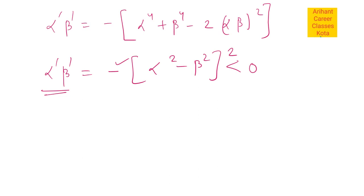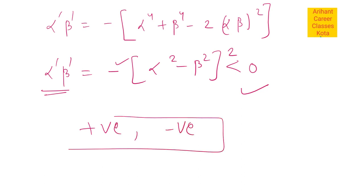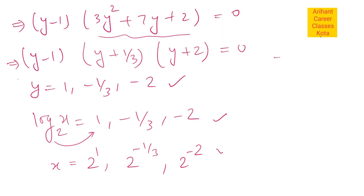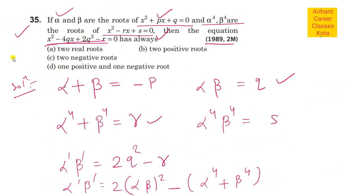अब दो roots हैं आपके - alpha dash और beta dash. यह product negative कब होगा? जब एक root positive हो और एक root negative हो. तभी दोनों का product negative आएगा. इसका मतलब है: one root is real and of opposite sign. तो option D जो है वो correct है - one root is positive and other is negative. Option D is the correct answer.